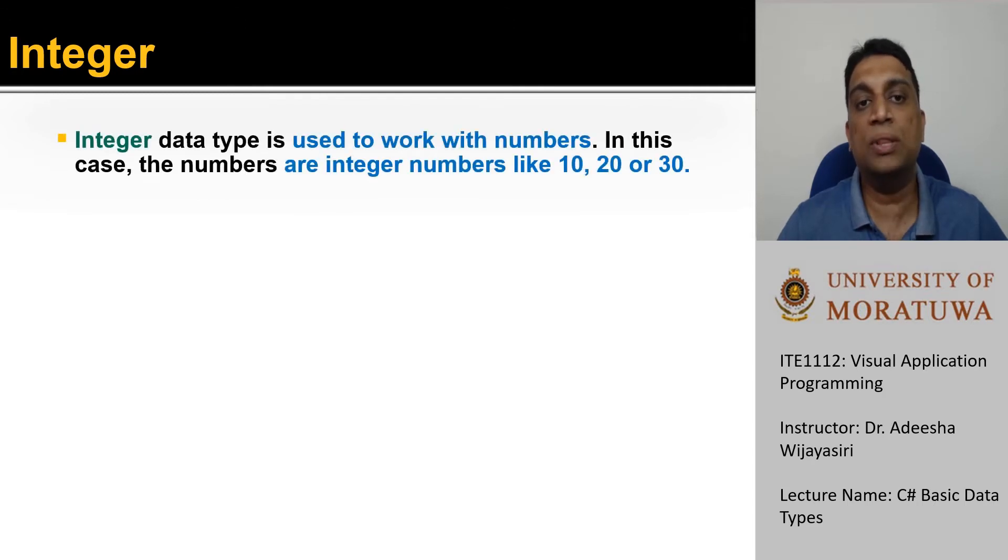One of the most popular data types used in programming languages is the type integer. It can be used to work with integer numbers. If you are working with integer numbers between minus 2.14 billion to plus 2.14 billion, then you can use the integer type to store the values.